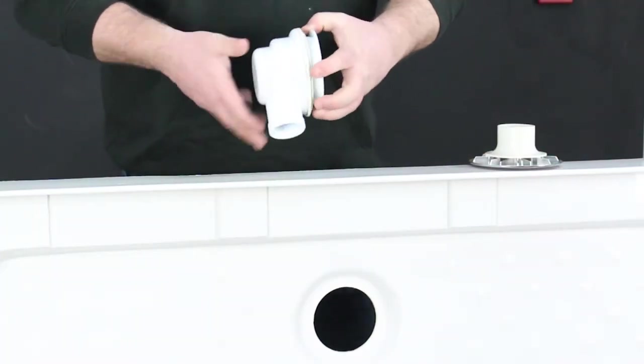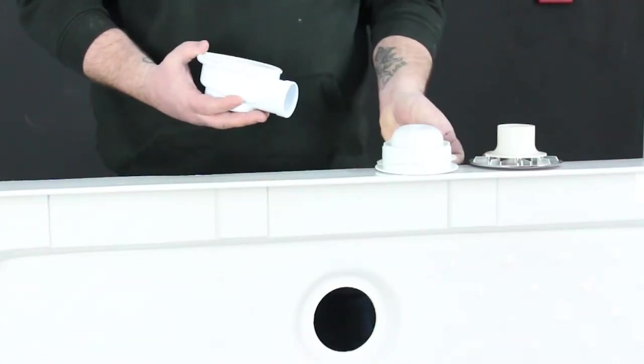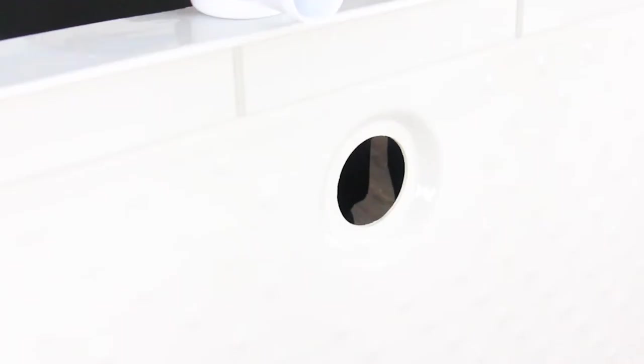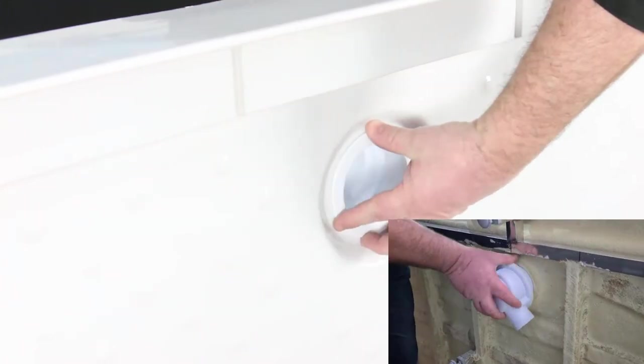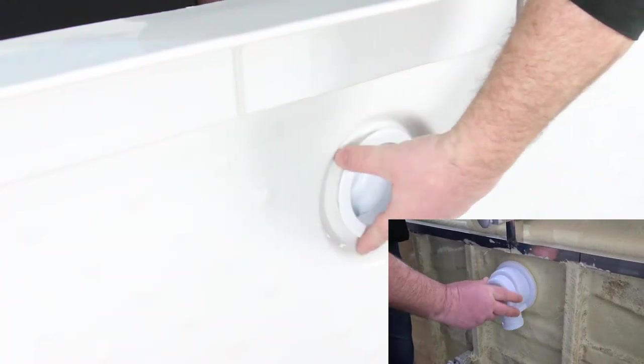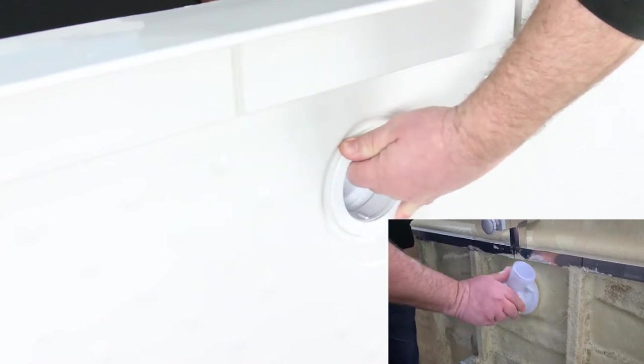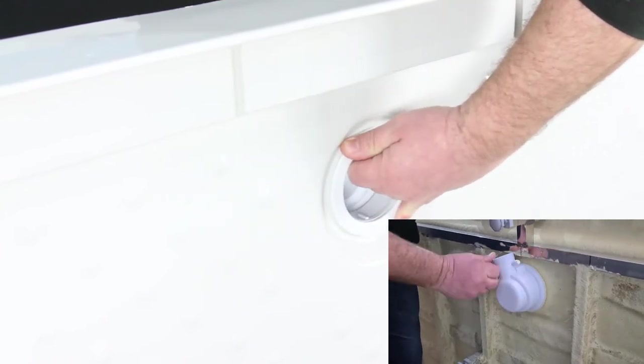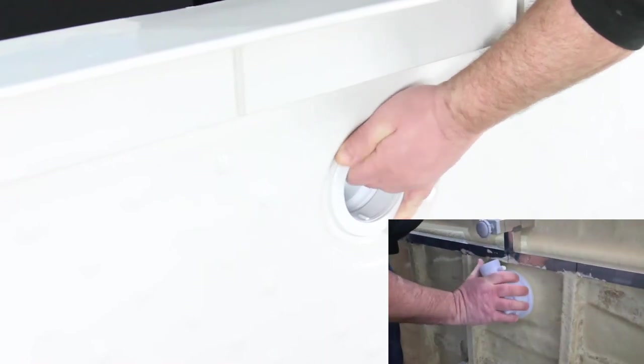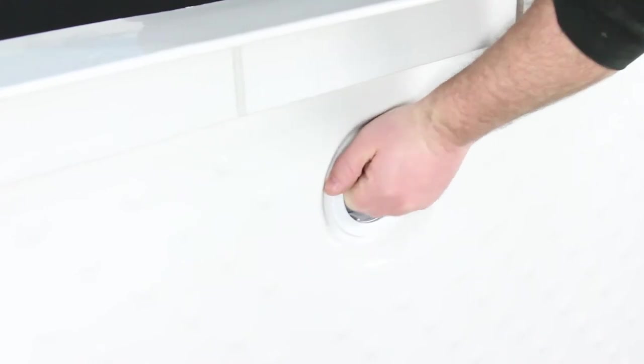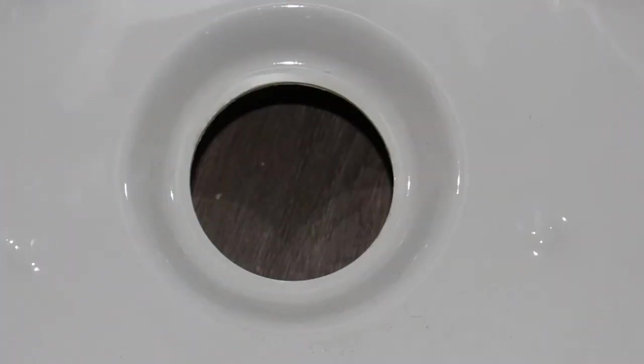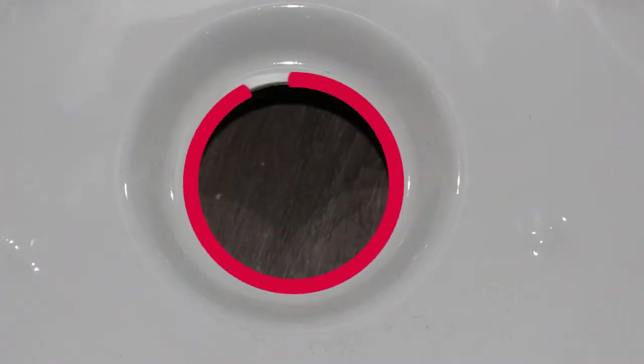To fit the waste, take the chrome cap out and unscrew the inner part of the waste. Take the main body of the waste and the rubber seal and place it under the tray. Then screw the inner part of the waste in from above. For ease, lift the tray up onto its side so you aren't hampered by the floor. We advise adding plumbers mate around the inside edge of the waste to create a more watertight seal.